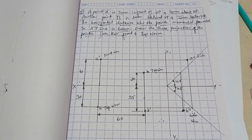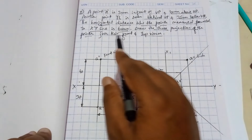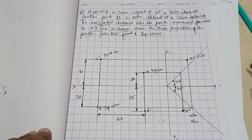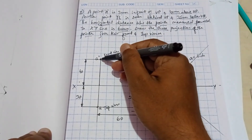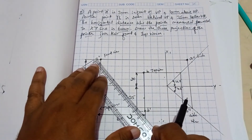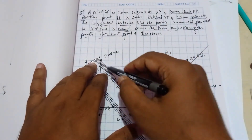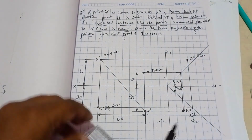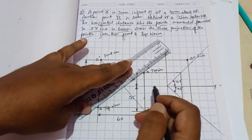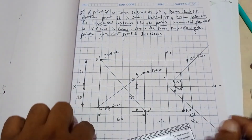Both side views of point A and point B are done. Now we join their front views and top views. The front view of A and front view of B are joined with a straight line. Then their top views are also joined with a straight line. This completes the problem.